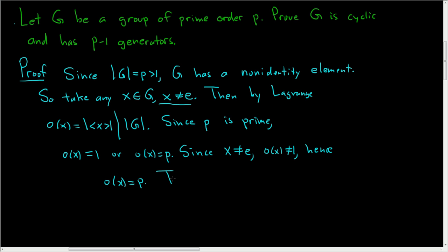So what does that mean? This means the group generated by X is a subgroup of G and it has the same number of elements as G. So it must be the entire group. So G is cyclic with generator X.